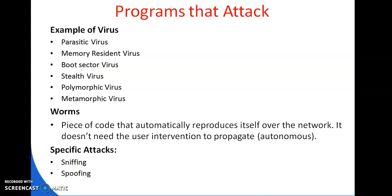Next is the worm. A worm is a piece of code that automatically reproduces itself over the network and does not need user intervention to propagate — meaning it is autonomous. A worm does not perform any destructive actions like a virus; instead, it only consumes system resources to bring the system down.